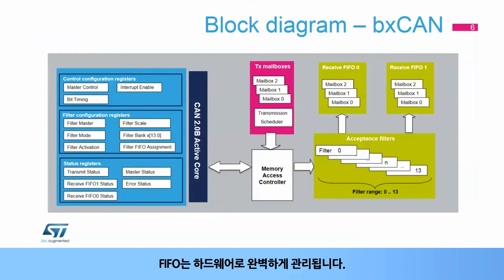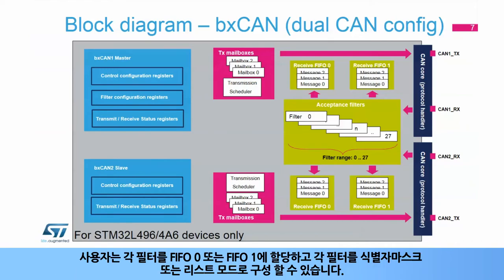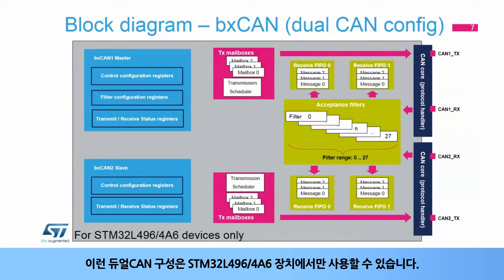The FIFOs are managed completely by hardware. This simplified block diagram of the BX CAN in dual CAN configuration shows the shared 28 acceptance filters between the two BX CAN modules. The user can assign each filter to either FIFO 0 or FIFO 1 and configure each filter for identifier mask or list mode. Note that this dual CAN configuration is only available for STM32L496 and A6 devices.